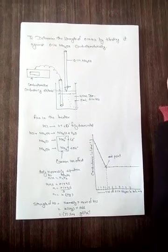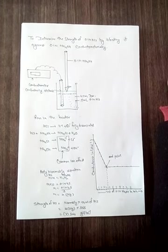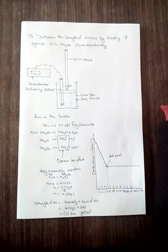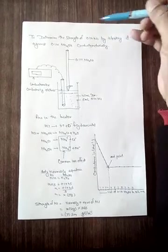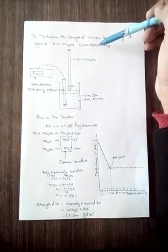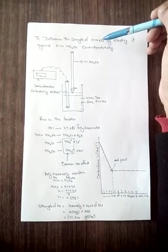Hello friends, today we are going to discuss how to determine the strength of 0.1 normal HCl by titrating it against 0.1 normal ammonium hydroxide conductometrically.